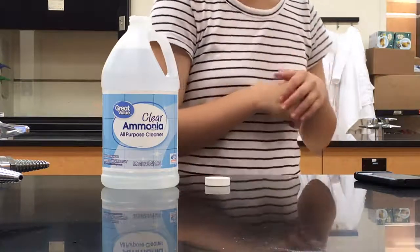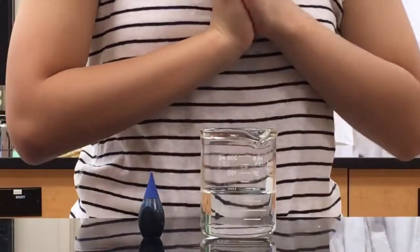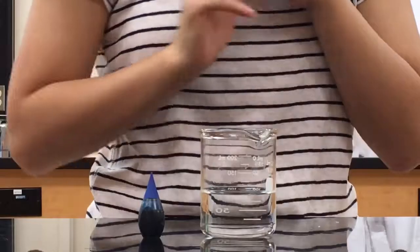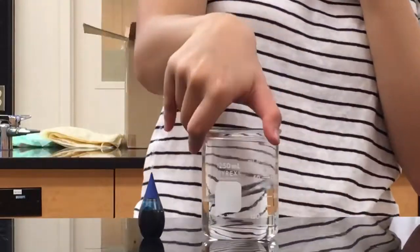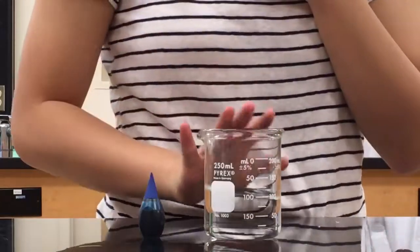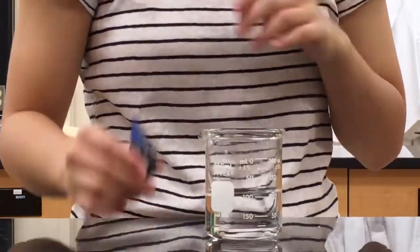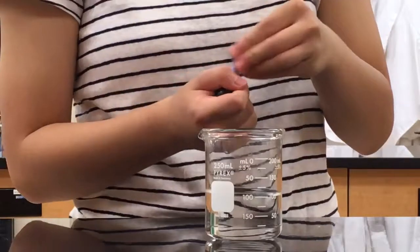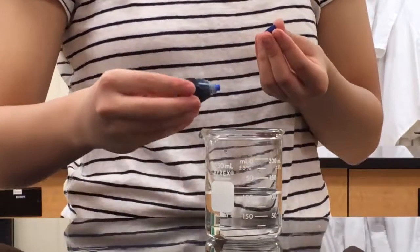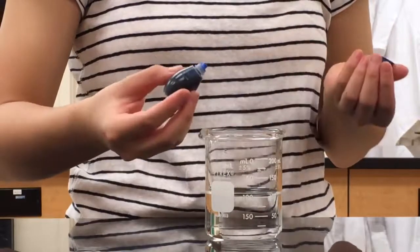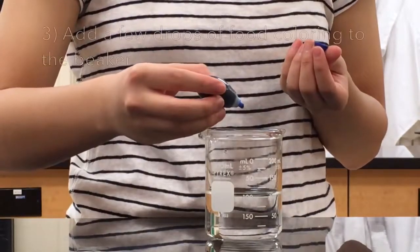So today we're talking about the motion of particles in water and ink. All you need is a 250 milliliter beaker and 100 milliliters of water in it, and you just need food coloring as well. So what you're going to do first is just drop some blue ink, and you have to ask the kids to observe what's happening to the blue ink as you drop it into the water.